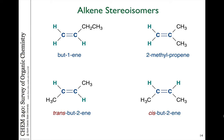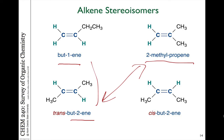We talked in the previous video about the fact that something like butene can have several different constitutional isomers. The double bond can be either starting at carbon 1 in bute-1-ene, or starting at carbon 2 in bute-2-ene, as well as there can be carbon skeleton rearrangements. These are all examples of constitutional isomers.